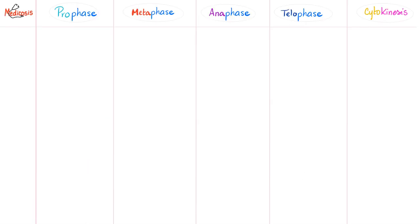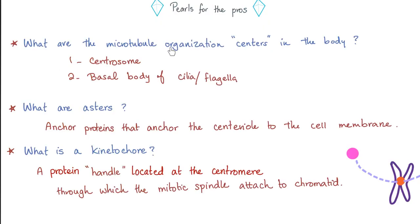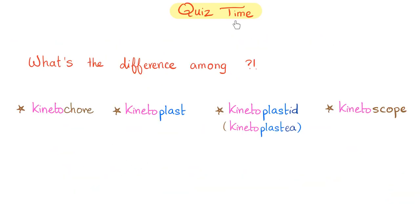If you want to take your education to the next level, make a table and compare between the phases — start by drawing the cell and then tell me what happens. Some pros for the pros: what are the microtubule organization centers in the body? The centrosome is one. The basal body of cilia and flagella is another one. What are asters? These are anchor proteins that anchor the centriole to the cell membrane at opposite poles of the cell. However, the kinetochore is different — it's the doorknob connecting the centriole to the centromere. Quiz time: what's the difference among kinetochore, kinetoplast, kinetoplastid, and kinetoscope?